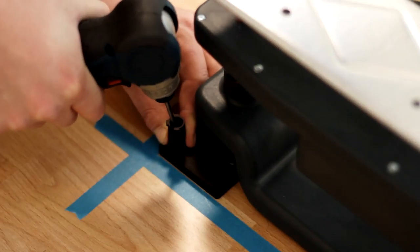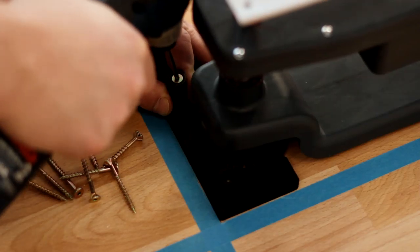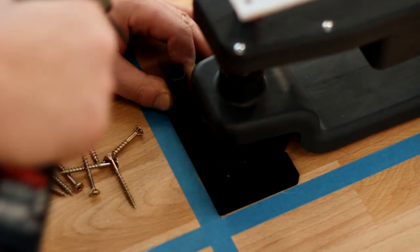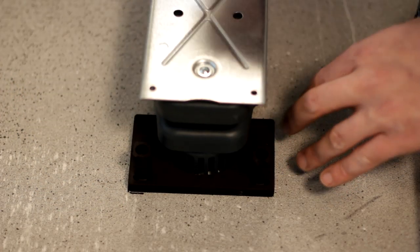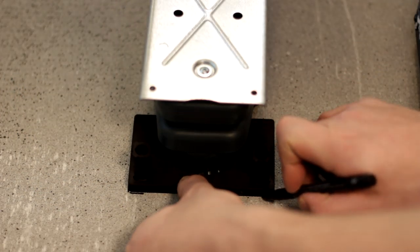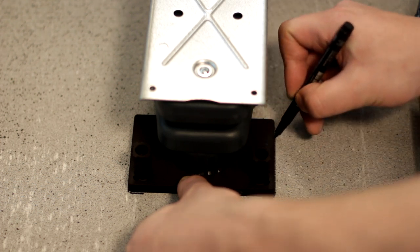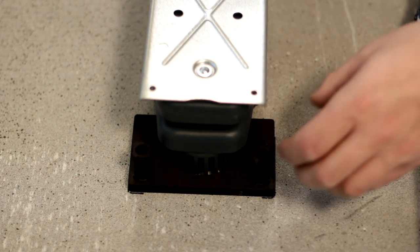On a wooden floor, you can mount the baselifts by attaching the brackets to the floor with screws. If you have floor heating or for other reasons want to avoid drilling holes in the floor, you can consider using glue rather than screws when mounting the baselifts.